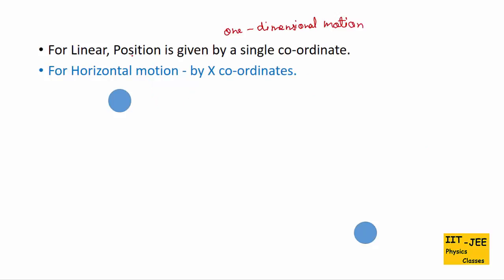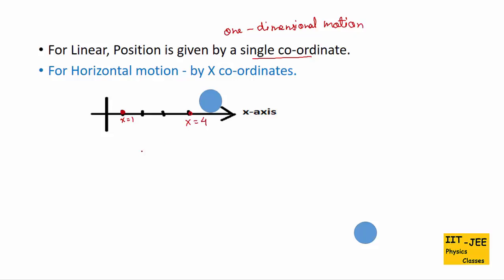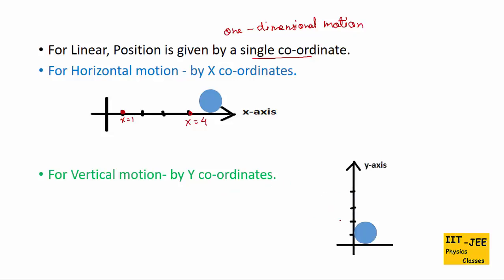That means the position of the object is given by a single coordinate. If the object is moving horizontally, like this ball moving on the floor from left to right, the position of the ball is given by the x coordinate — for example, x = 1 or x = 4. For vertical motions, we use y coordinates. Like if you throw a ball upward or downward, we use y coordinates such as y = 1 or y = 4.